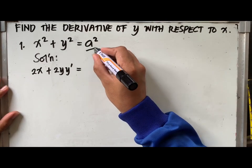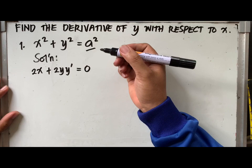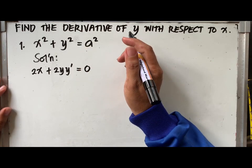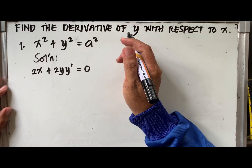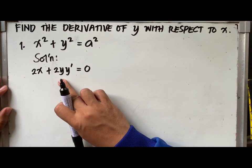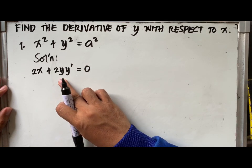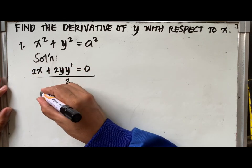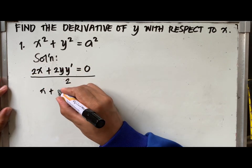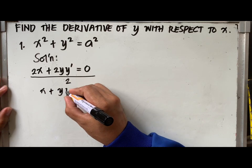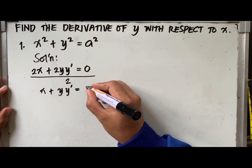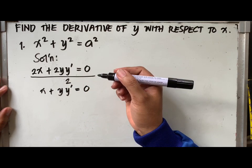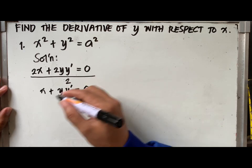Now, the derivative of constant is 0. Since 2 is common in the left side of the equation, we can eliminate that 2 by dividing both sides by 2. Thus, we have x plus y, y prime equal to 0.